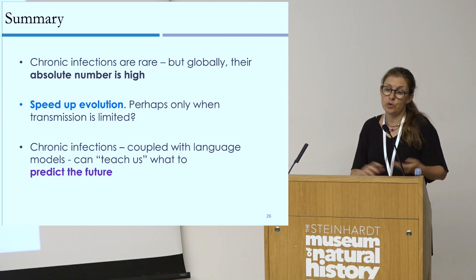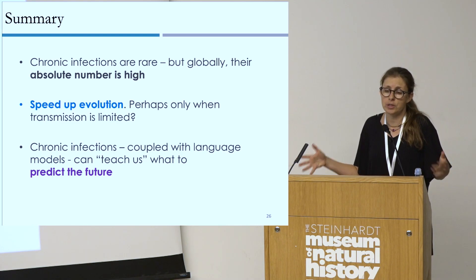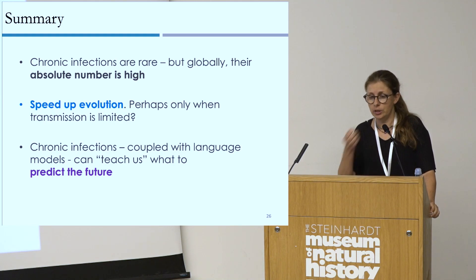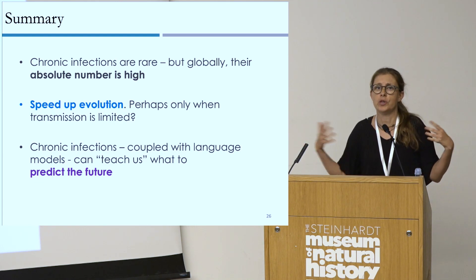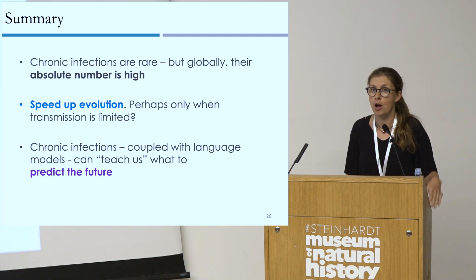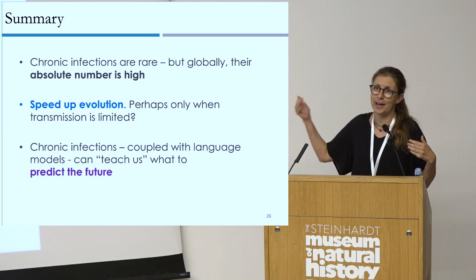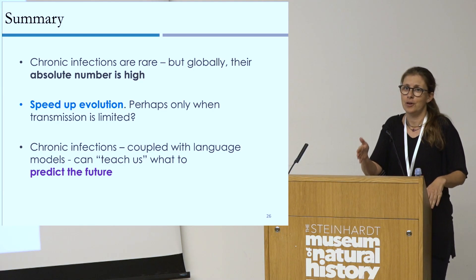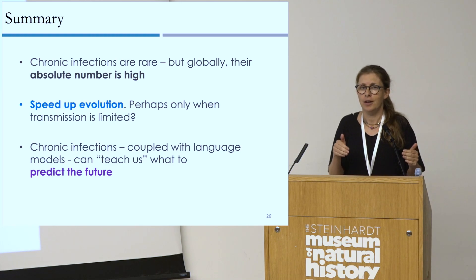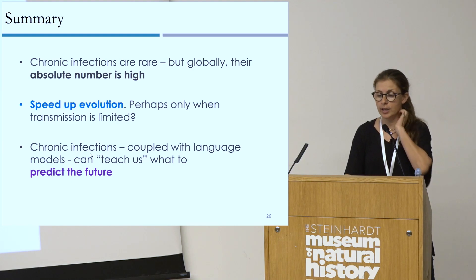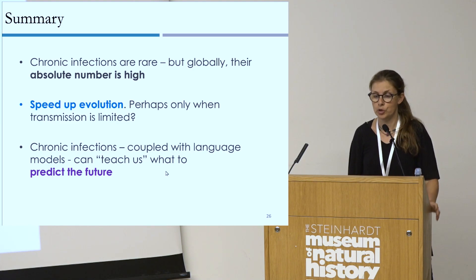To summarize: chronic infections are generally rare, but globally their absolute number is high. They speed up evolution, but perhaps that is only critical when transmission is limited. Since Omicron, there is so much transmission that evolution occurs more through transmission chains and less through these variant-of-concern-generating events. Although we never know — we constantly monitor and ask whether a new highly divergent variant could emerge. We are still seeing people chronically infected with Delta today, which is concerning.